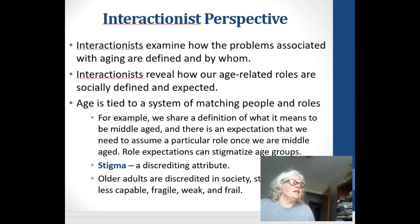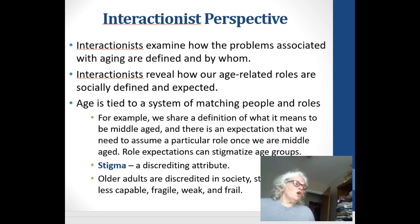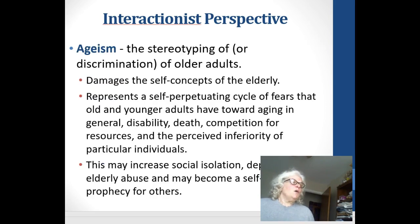The interactionist perspective looks at how problems are associated with aging, who defines them, and how age reveals socially defined roles. We see the issue of stigma — aging has a discrediting attitude. Older professors get much lower evaluations than younger professors and are not respected at the same level in the United States, unlike in Europe. This becomes a social construct of what old is and what old should be doing. From the interactionist perspective, ageism — the stereotyping or discrimination against older adults — is a key issue.